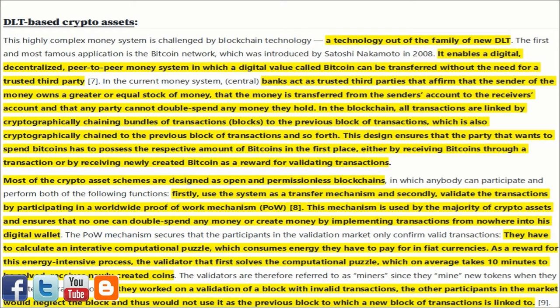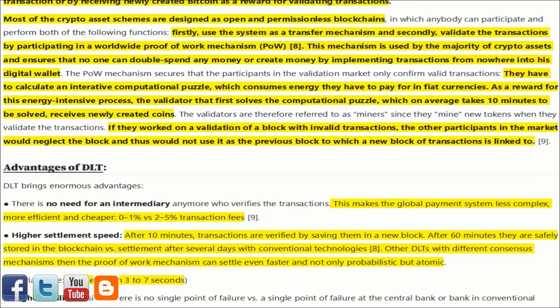In the blockchain, all transactions are linked by cryptographically chaining bundles of transactions to the previous block of transactions, which is also cryptographically chained to the previous block and so forth. This design ensures that the party spending Bitcoins must possess the respective amount — either by receiving Bitcoins through a transaction or by receiving newly created Bitcoin as a reward for validating transactions. Most crypto asset schemes are designed as open and permissionless blockchains, in which anybody can participate and use the system as a transfer mechanism, and validate transactions by participating in a worldwide proof-of-work mechanism.